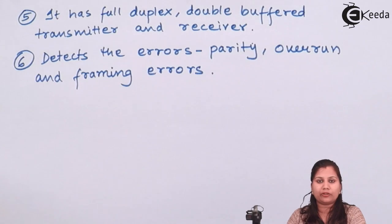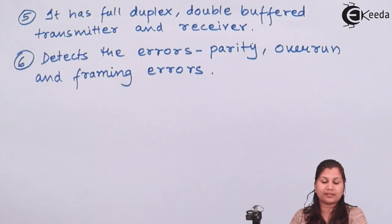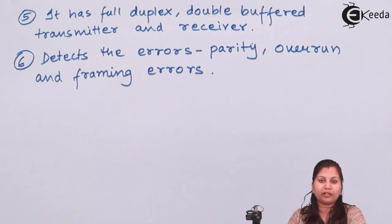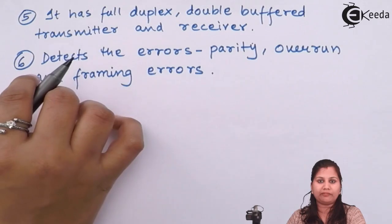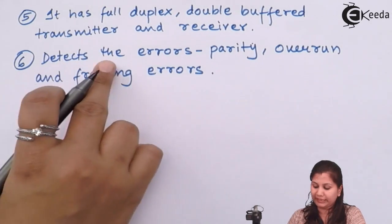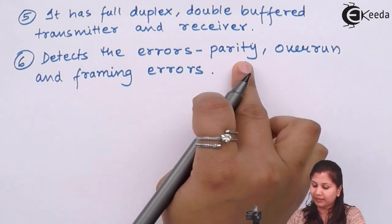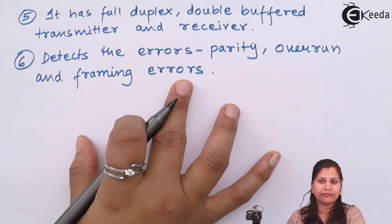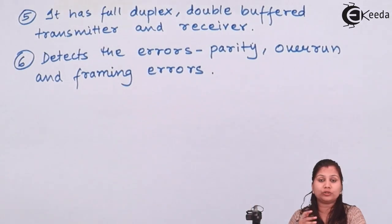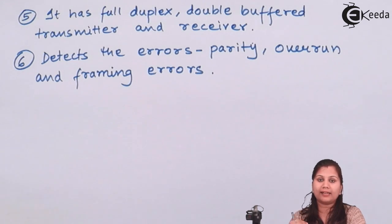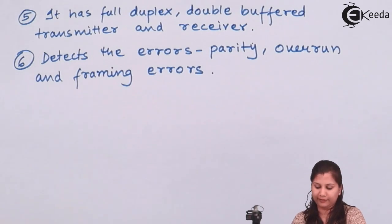When data is transmitted or received over long distances, errors should not occur. One feature of the 8251 is that it is capable of detecting errors like parity error, overrun error, and framing errors. So all these errors can be detected, and data is transmitted and received at high accuracy by the 8251 communication interface.